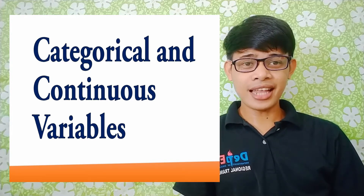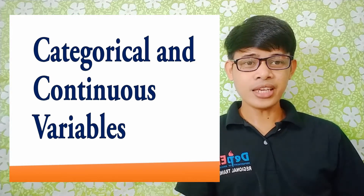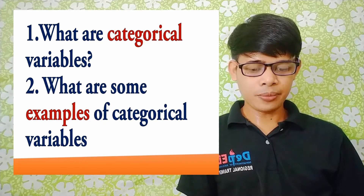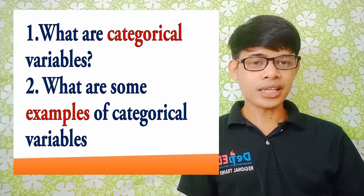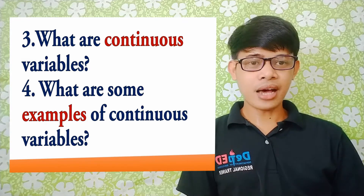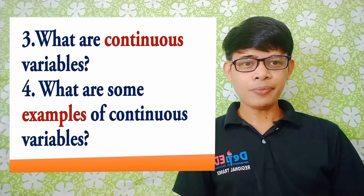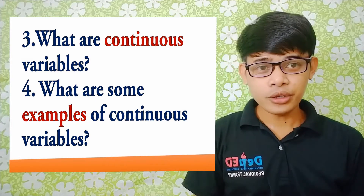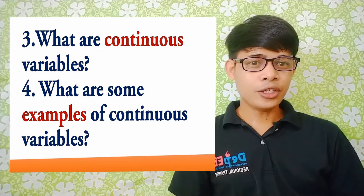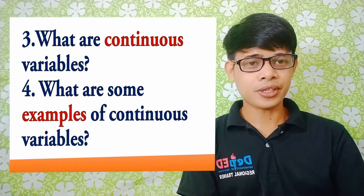I discussed last time in our previous video the topic about independent and dependent variable. In this video, we will try to answer the questions: number one, what are categorical variables? What are some examples of categorical variables? Number three, what are continuous variables? And what are some examples of continuous variables? You need to learn these types of variables because you will deal with them later on when you do your data analysis in chapter 4 of your research. Hopefully, you will complete listening to this video so that you will learn more about these new types of variables.